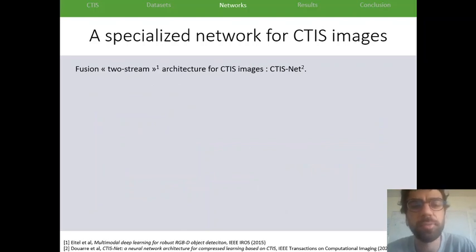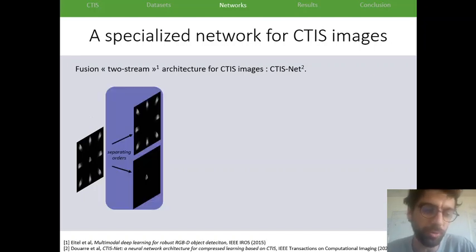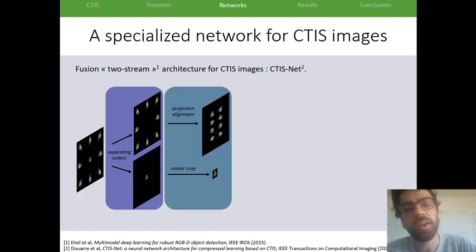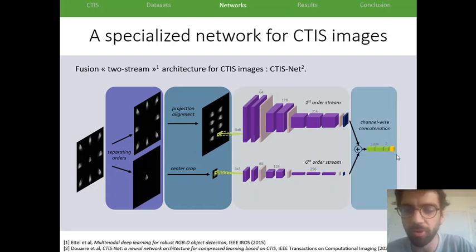And then we also devised a specialized network for CTIS images. It's based on the idea of the fusion architectures, which are also called two-stream architectures. And we called this network CTIS-NET. The idea of this network is to separate the information from the first order and the zeroth order by simple computer vision operations. And then to apply some preprocessing to each of the orders, which I'll come back to. And then to process each order with a separate subnetwork. And then to concatenate the results of the network to have only one answer for a given image. And we did this because in our first experiments, we realized that the network was having trouble to analyze both orders at the same time, and it tended to over-focus on one order without considering the other one during its training.